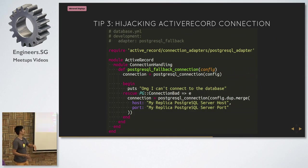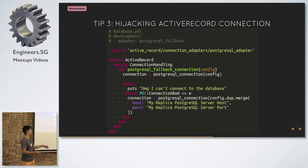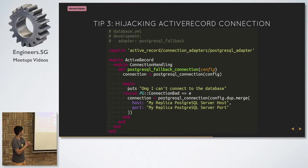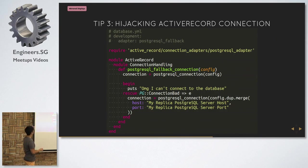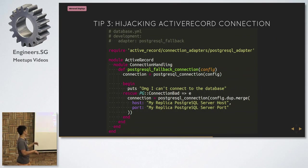We didn't want it at that level — we wanted it at the app level to reduce the complexity of doing it at the system level. This is not documented, but it's something I discovered. It's supposed to be a public API, so I don't know why it's not documented. So if you declare your adapter in your database YAML, you can call it anything — in my case, `postgres_fallback`.